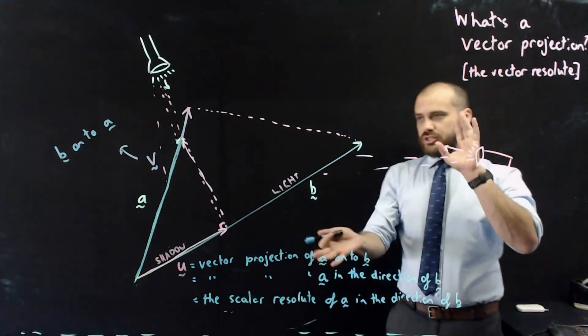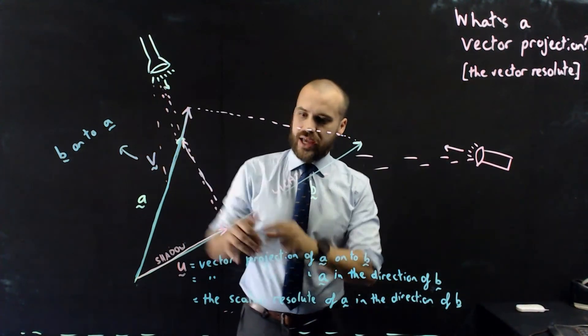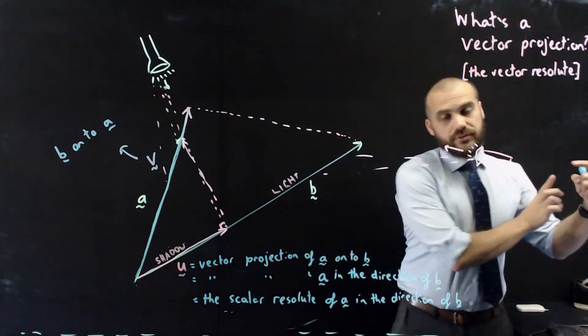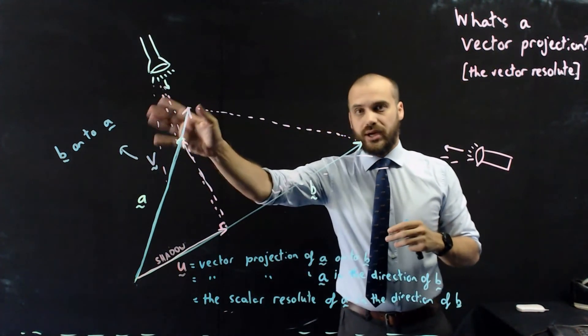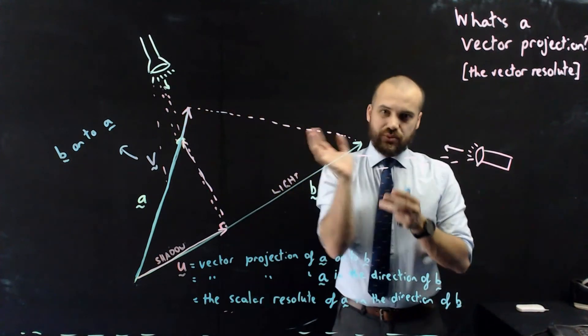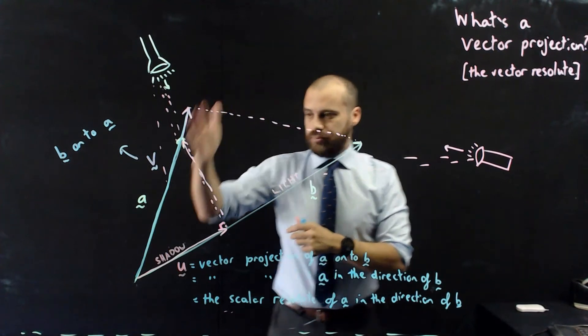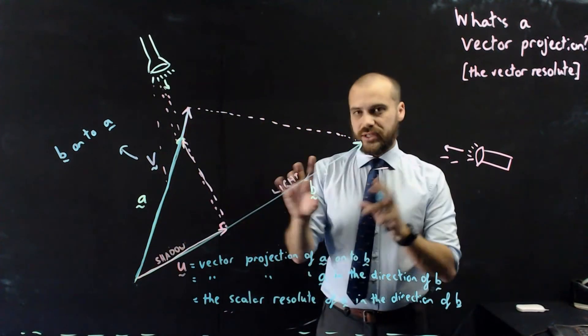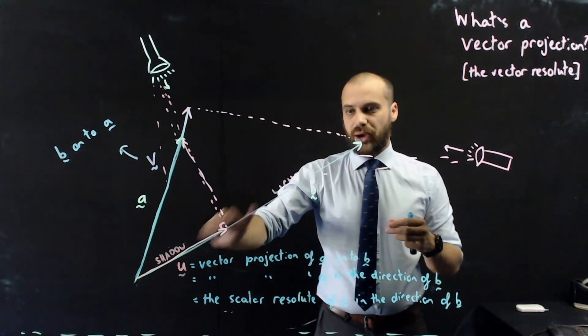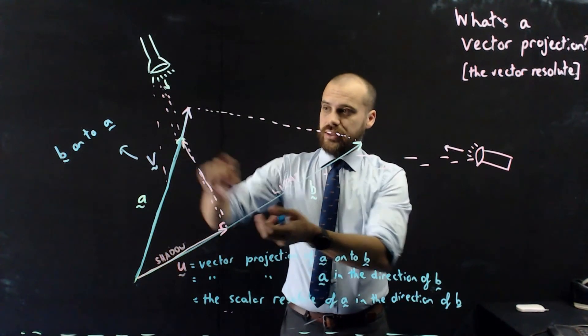So we can do vector projections in two ways. We can push our light this way and do a vector projection of A onto B, or we can move this way, which is a vector projection of B onto A. In both cases, what we're finding is the shadow of the vector placed onto the new vector, and it'll allow us to do that thing I talked about earlier, breaking it up into components. So it's one in the direction of a vector, the other in...